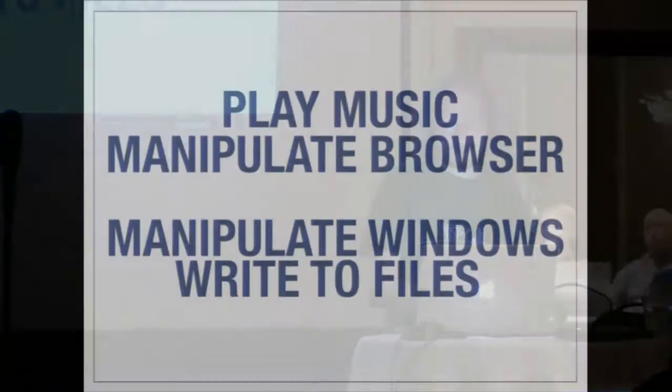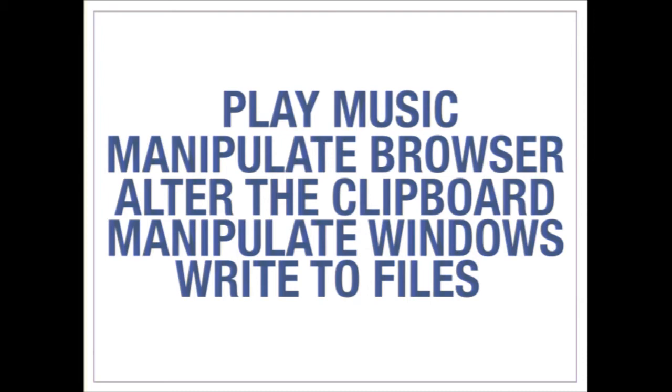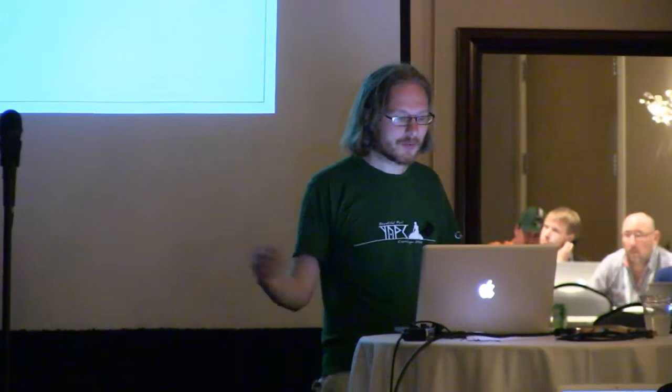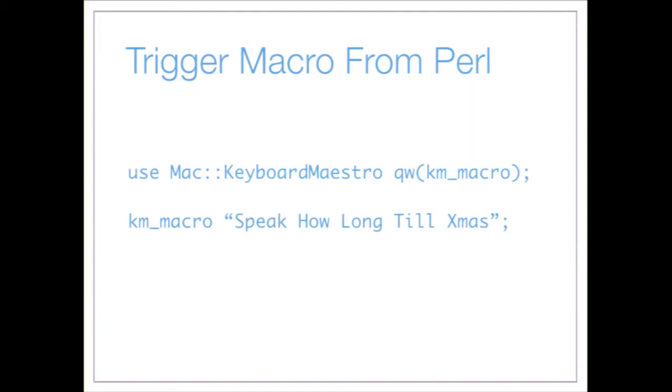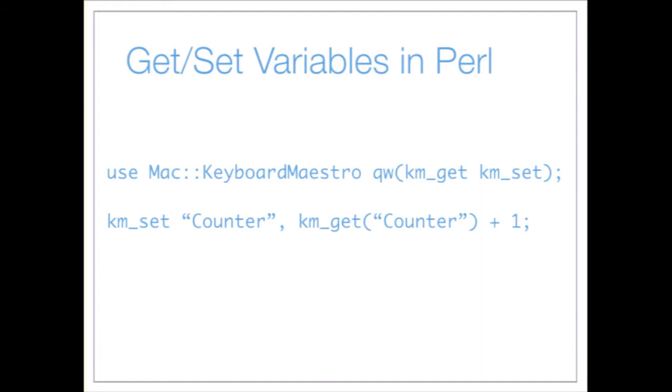How does this integrate with Perl? We've seen we can embed small Perl scripts in it, but we also have a Perl module that lets us trigger these macros from Perl. I can use Mac::Keyboardmaestro to trigger 'how long until Christmas' for example. There's a get and set method so I can use it to set environment variables passed back. When triggered into a Keyboard Maestro script you can set an arbitrary number of variables. The best place to look is CPAN — my modules are there under Mac::KeyboardMaestro.